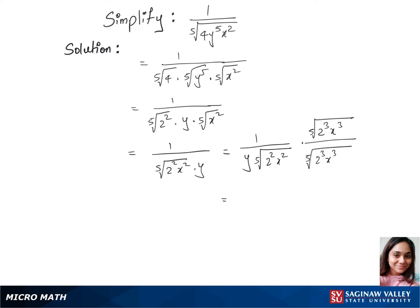Now we have 5th root of 2 power 3, which is nothing but 8, times x power 3 over, under the 5th root we have 2 power 5 and x power 5. They get cancelled and we are now left with 2x times y, which is our final answer.